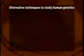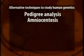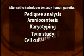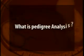That is why alternatives for genetic experiments on humans have been worked out. The following are the alternatives: number one is pedigree analysis, number two is amniocentesis, number three is karyotyping, number four is the study of twins, number five is cell culture study, and biochemistry and other methods have also been worked out.